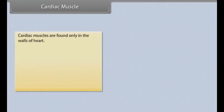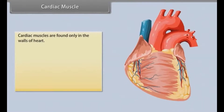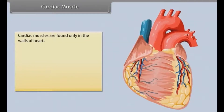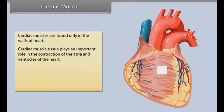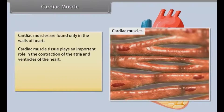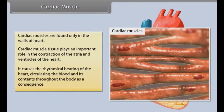Cardiac muscles are found only in the walls of the heart. Cardiac muscle tissue plays an important role in the contraction of the atria and ventricles of the heart. It causes the rhythmical beating of the heart, circulating the blood and its contents throughout the body.